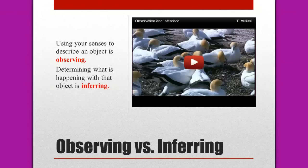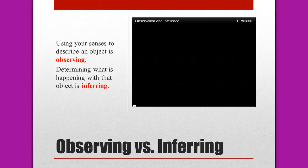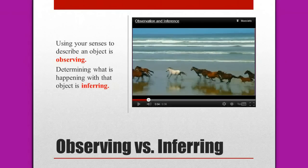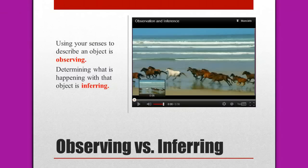We watched a video clip before of various animals doing different things. We're going to watch the beginning of this video again and watch the horses. What are the horses doing? How are they moving? Why are they moving across the beach that way? Is that a beach? Is that a lake, or is that an ocean behind them? Why do you think they are moving away as opposed to towards the camera?